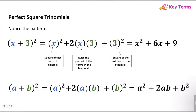This is where we get the perfect square trinomials factoring pattern. Notice that (x + 3)² gives us the square of the first term (x²), then 2 times the product (x times 3 = 3x, times 2 = 6x), plus the square of the last term (3² = 9). So a plus b squared equals a² + 2ab + b².